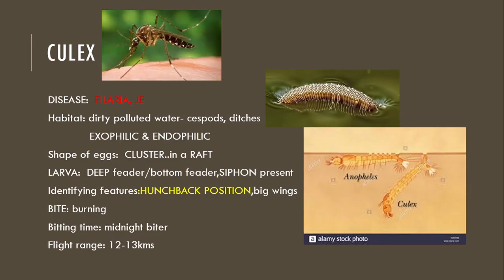Let's move on to Culex mosquito. It causes diseases called filaria and Japanese encephalitis. It lives in dirty, polluted water, cesspits and ditches. It is both exophilic and endophilic, so it is generally known as a nuisance mosquito. The shape of eggs are clusters in a raft-like arrangement. As we can see in this picture, clusters of eggs which are raft-like.